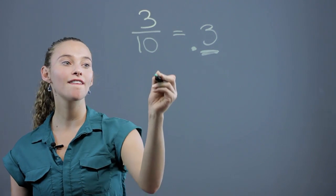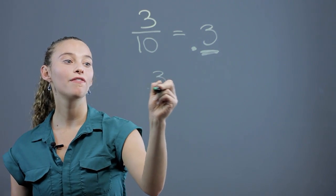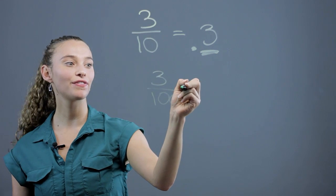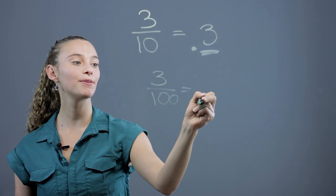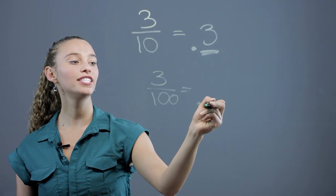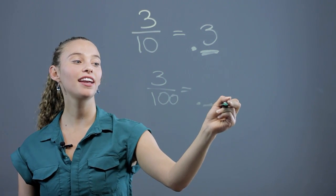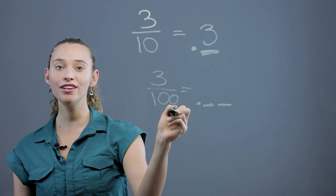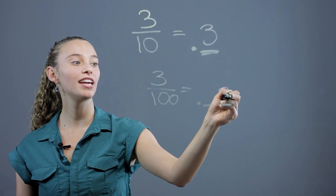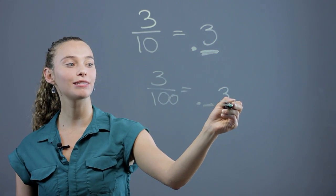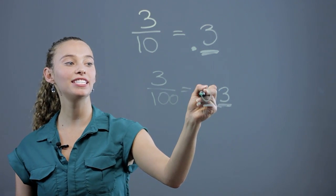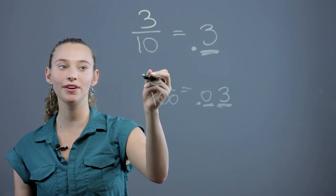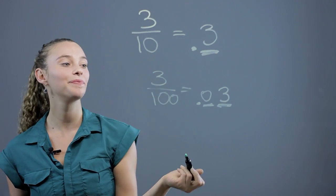If we have 3 over 100, that's the number as a fraction and we want to turn it into a decimal. The first place is the tenths place, the second is the hundredths place. So it's 3 hundredths — we're going to put it in the hundredths place, and then we're just going to put a zero in the tenths place, because that's the number before 3 — it's zero.